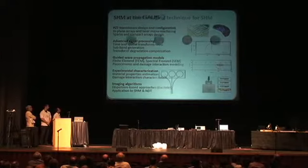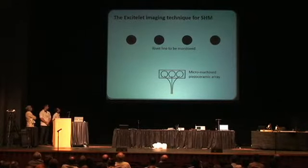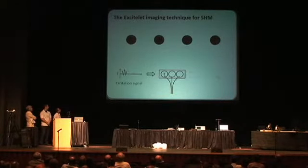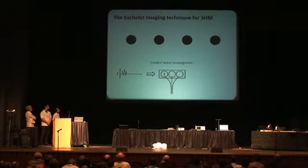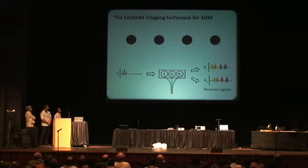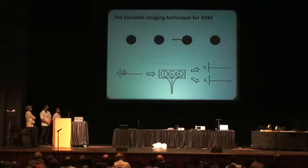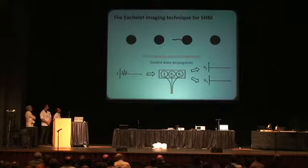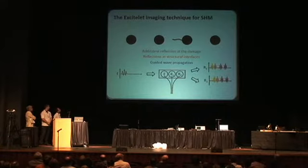We show the application of the excitation imaging technique for SHM. The technique is based on the use of a piezo-ceramic array, where one element of the array is used as the wave generator. The waves propagate into the structure and encounter features in the structure. When damage appears, we send again a signal using the imager, and the waves propagate and interact with the defect. The signal is sent back to the receivers and recorded.